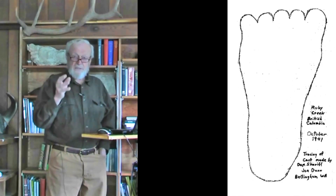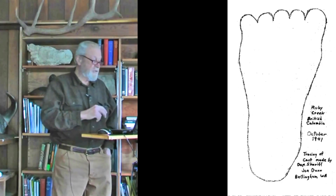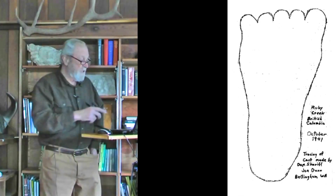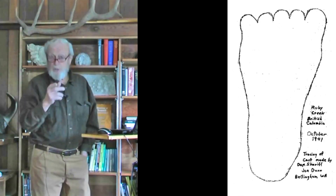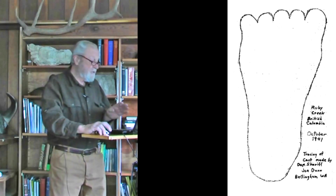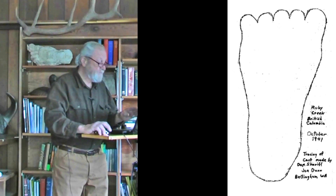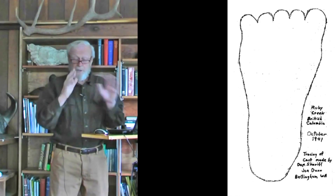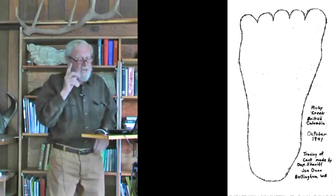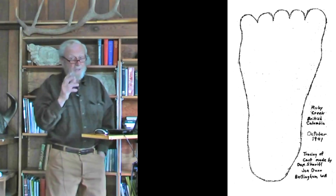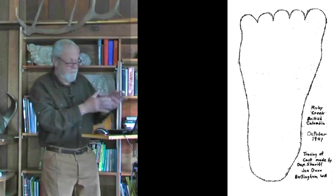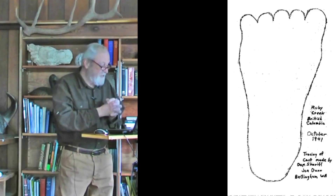That original cast has been lost, but a tracing of it survives. This is the tracing of it here, loaned to me by John Green. It was cast by a Washington State Deputy Sheriff who came up to BC and cast a Sasquatch track in 1941. So this is pretty interesting — this is our oldest track cast, or track cast tracing.